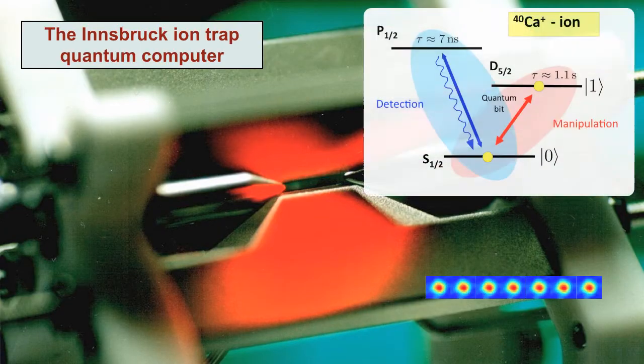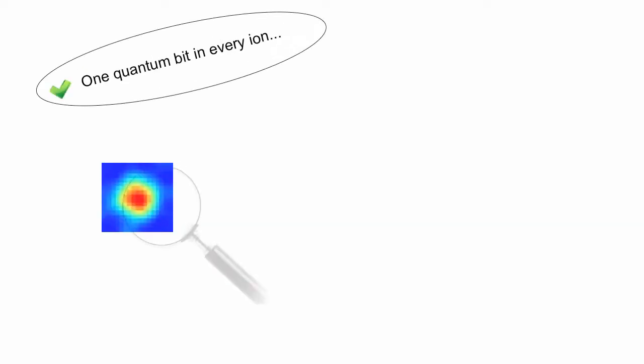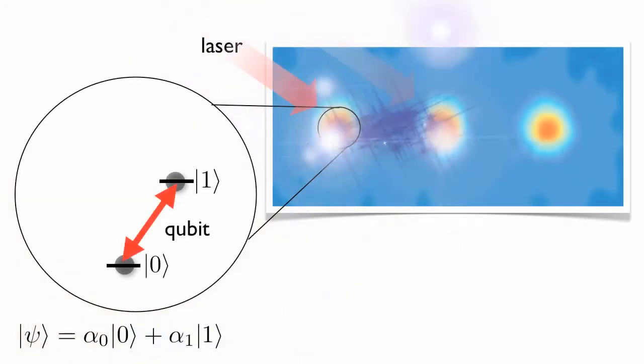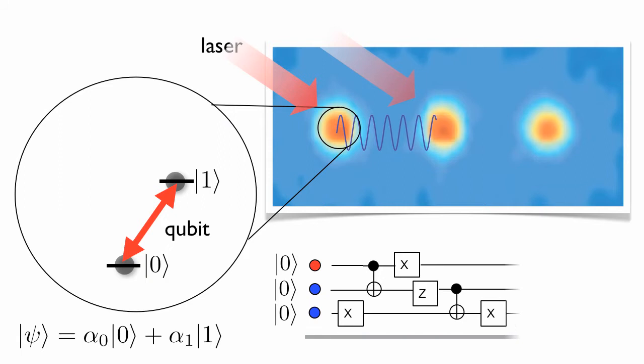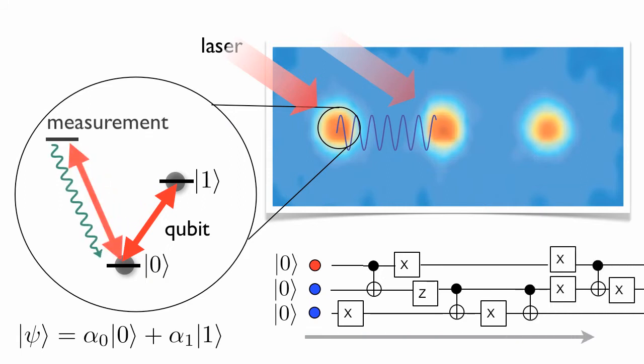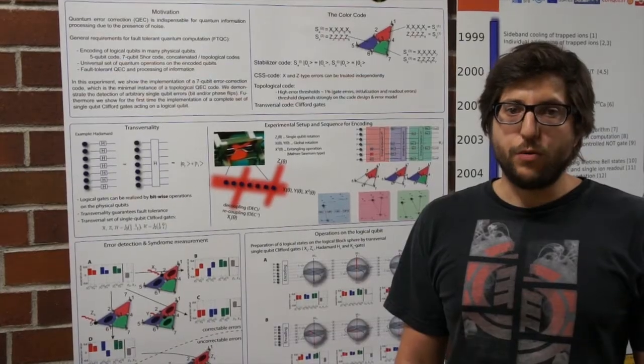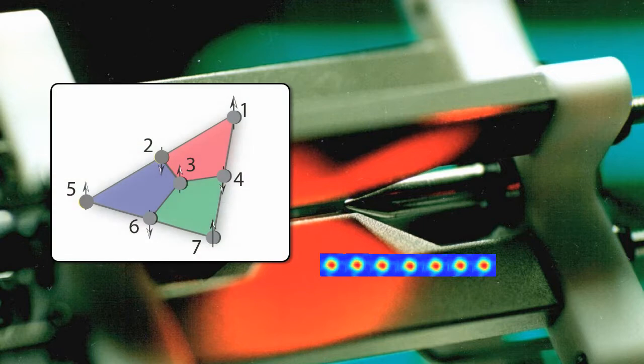Once the ions are cooled down, we use different internal electronic states of the ions to encode one bit of information, a qubit, in each of the ions. We then use precisely timed laser pulses applied to the string of ions to realize quantum gate operations, create entanglement between different qubits, and to measure the final state of our quantum register at the end of the quantum computations that we carry out.